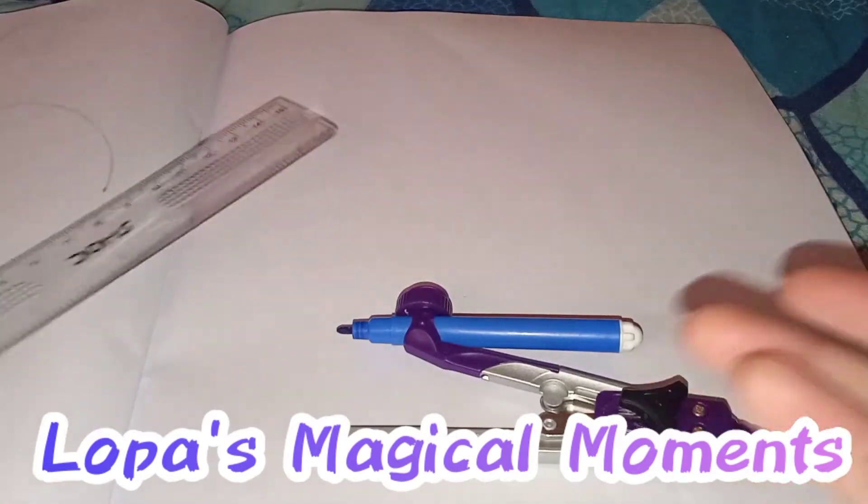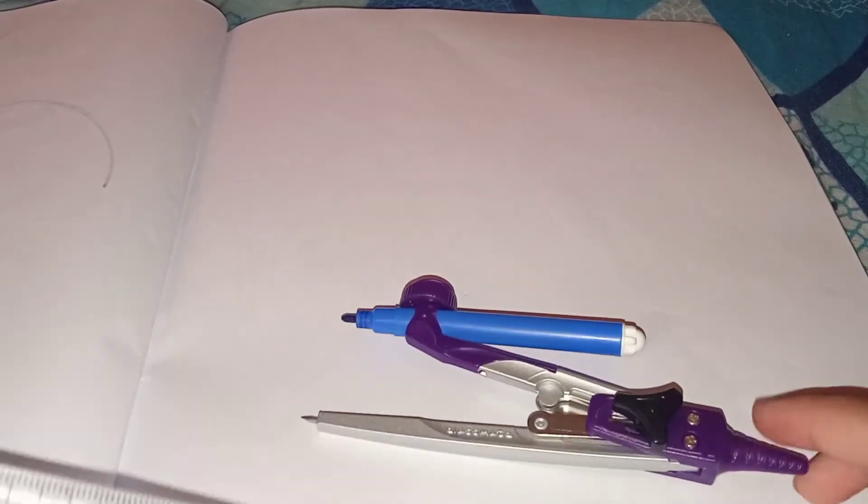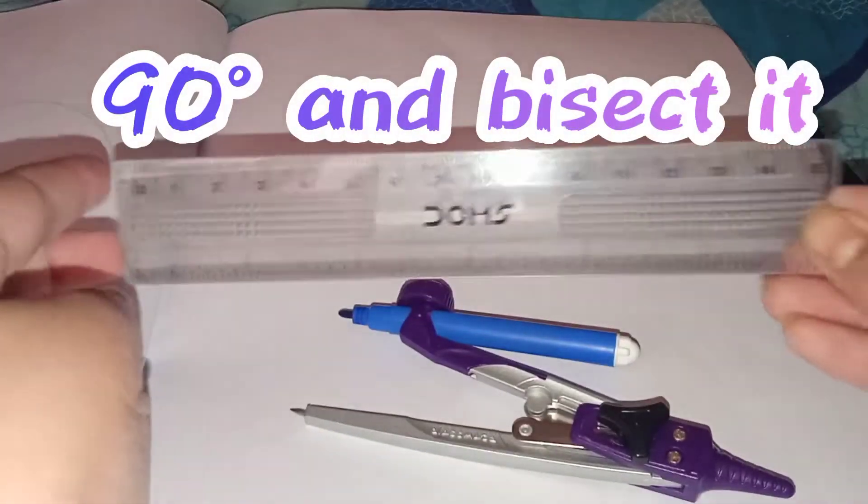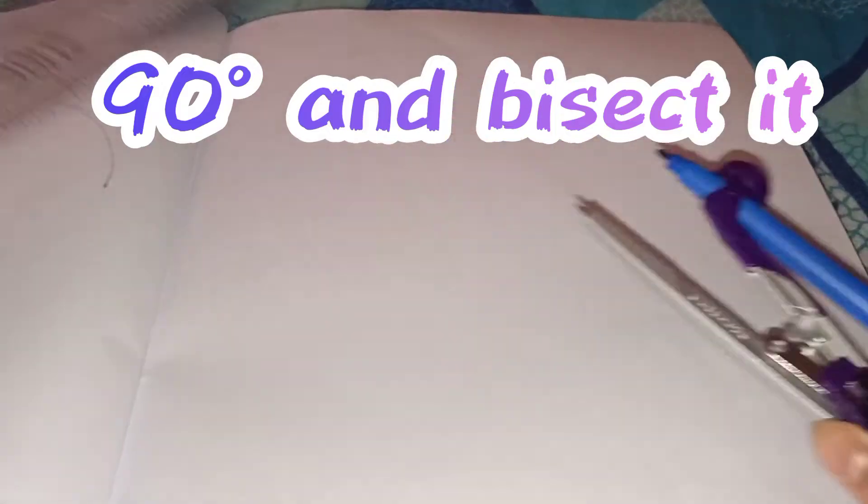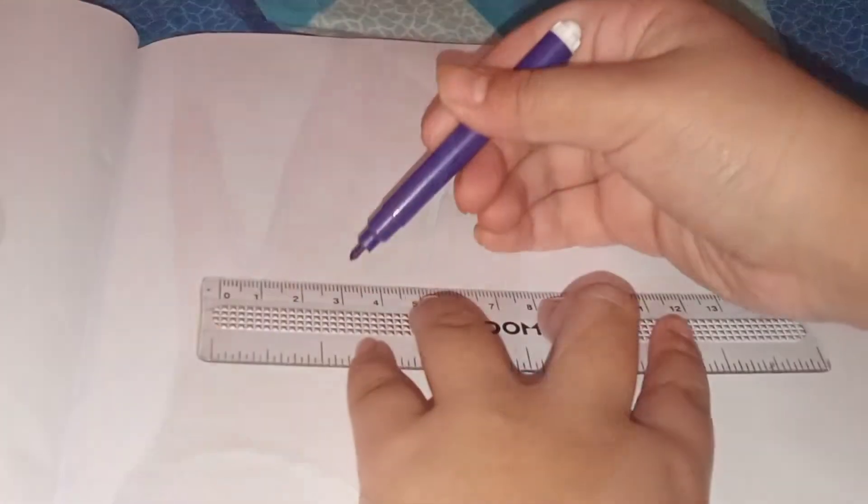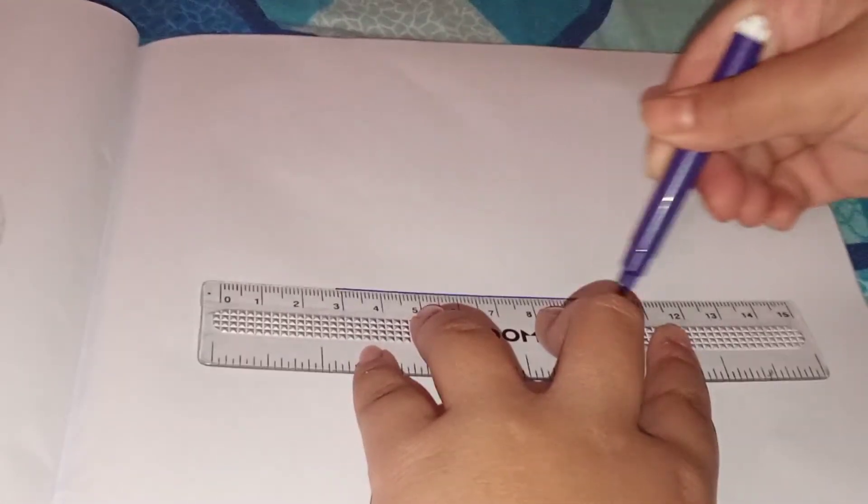Hello everyone, welcome back to my channel, The Past Magical Moments. Today I'm going to construct the angle of 90 degrees with the help of a ruler and compass. So first of all, you need to take your ruler or scale, whatever you have, and draw a line AB like this.